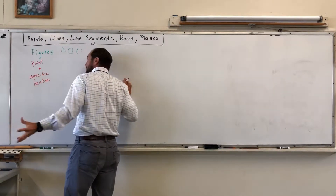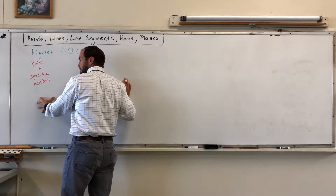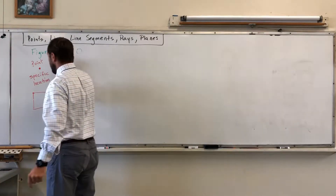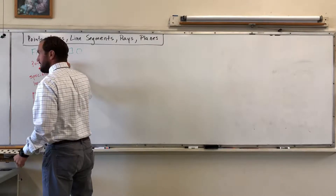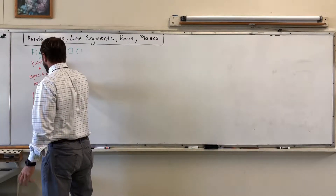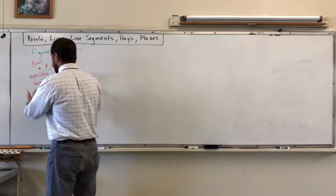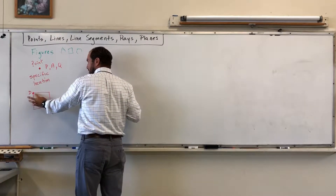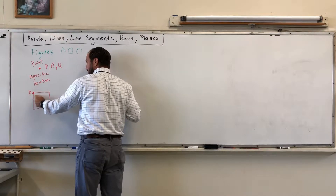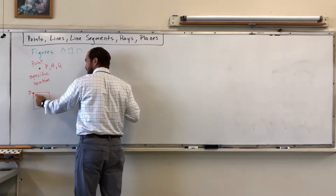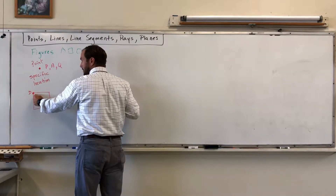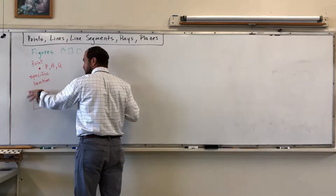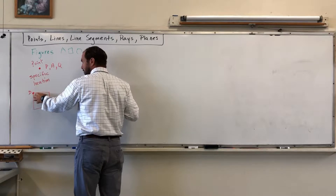A point helps direct your eyes to a certain part of a figure. If I have a square and I have a point here, most points are labeled by a certain letter — could be P, A, Q, whatever. Let's call this point D. A point talks about a specific location. It's one-dimensional, and it may be part of two different line segments.